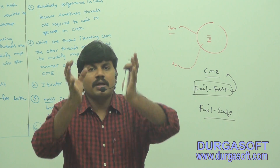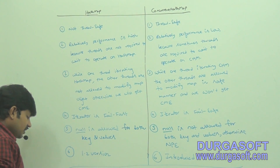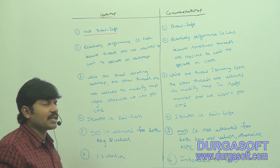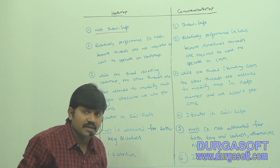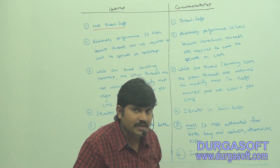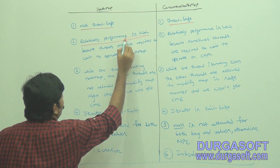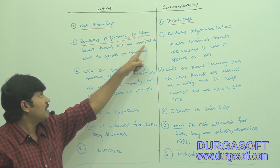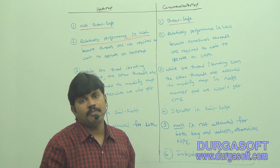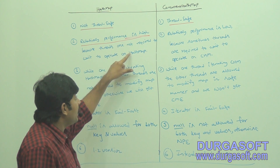Let me put all these differences into tabular form. Normal HashMap is not thread safe because multiple threads are allowed to perform operations simultaneously, which may cause data inconsistency problems. ConcurrentHashMap is always thread safe because multiple threads can only update it in a safe manner. Relatively, HashMap has higher performance because threads are not required to wait — even 1 lakh threads can simultaneously operate on a HashMap object.